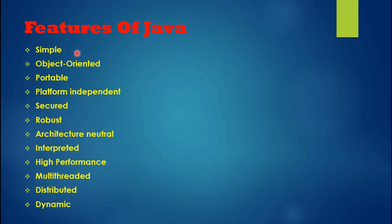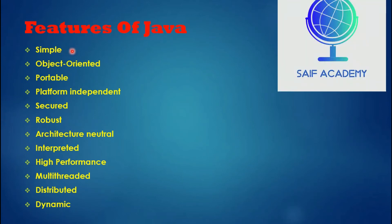Java is a simple programming language. Its coding is clean and easy to write. Compared to C and C++, Java is simpler. If a project is done in C language, it takes more code, whereas the same project done in Java takes much less code, making Java easier to work with.